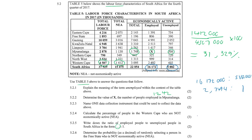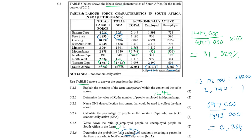Question 5.2.6: Determine the probability as a decimal of randomly selecting a person in the Free State who is not economically active. In the Free State we use 697 over the total population of 1893. Adding zeros makes no difference — you still get the same answer of 0.368. Leave the answer as a decimal; do not multiply by 100 to get a percentage, as per the instruction.